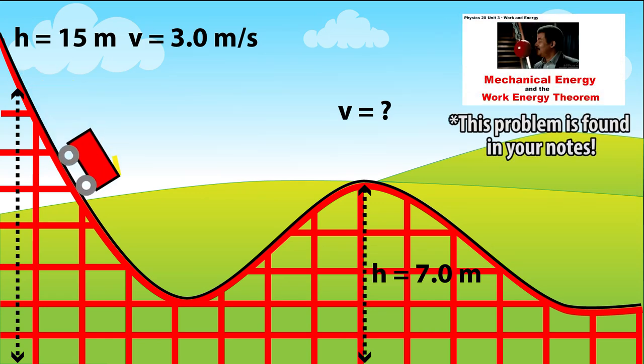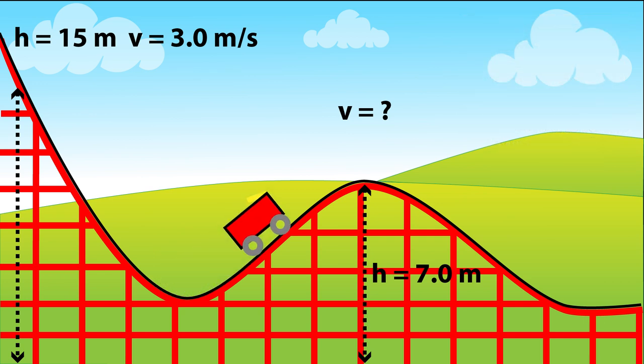Here we have the roller coaster moving 3 meters per second, 15 meters up in the air to start off with. Later on it's going to be 7 meters up in the air and we want to know how fast it's going at that point in time.